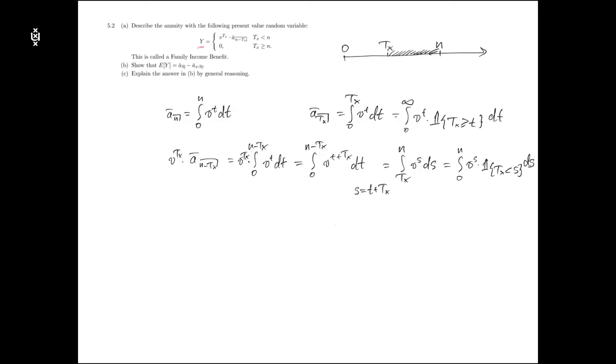In part b of the question, we need to show that the expected present value of the annuity from a can be written as a difference between annuity certain paid continuously and term continuous annuity.